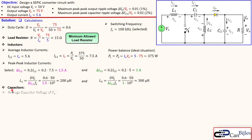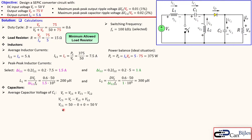Now we move to the capacitor values. The average voltage of C1 can be calculated using Kirchhoff's voltage law: Vs equals the voltage across L1 plus the voltage across C1 plus the voltage across L2 (with a minus sign). Since the average voltage across an inductor is zero, both inductor terms drop out, meaning Vs equals the capacitor voltage of C1. So the average voltage of C1 equals the source voltage.